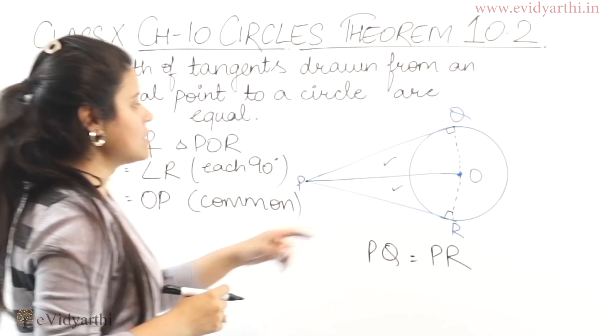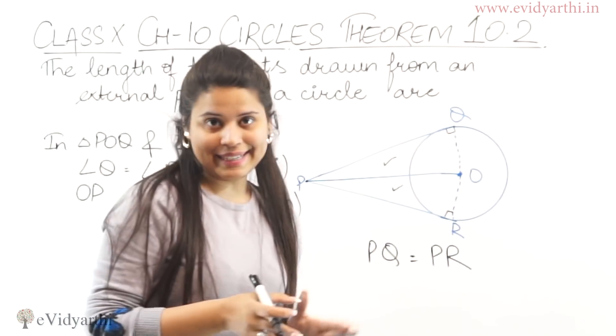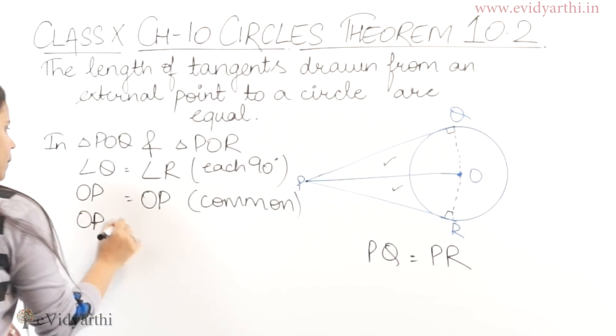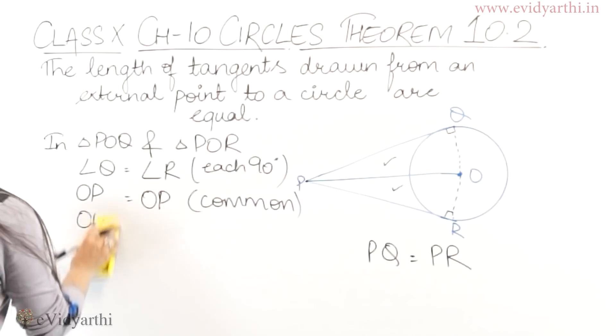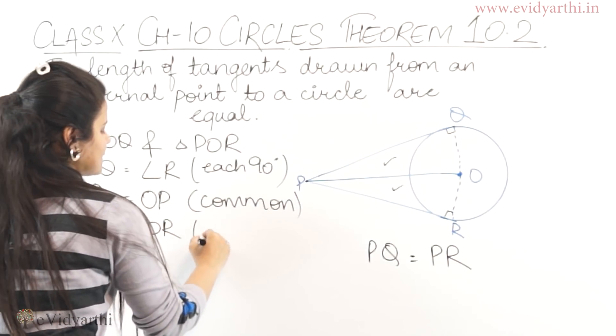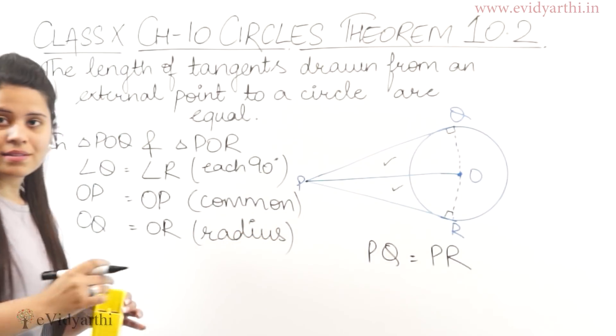Now, this is OQ and OR. These are the radii of the circle, and the radii of a circle are the same. So we can say OQ is equal to OR. Reason: they are the radii of the circle.